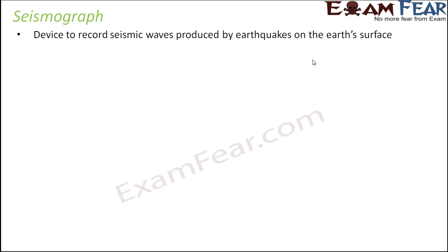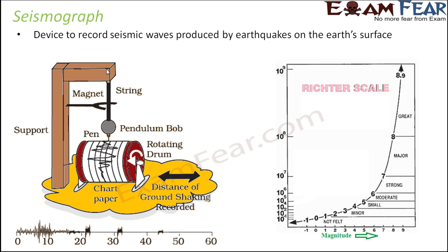Let us see how a seismograph looks and how it works. The purpose of a seismograph is to accurately measure the motion of the ground. During an earthquake, tall buildings and bridges start shaking, so seismographs are always connected to the bed rocks because bed rocks are comparatively more stable.